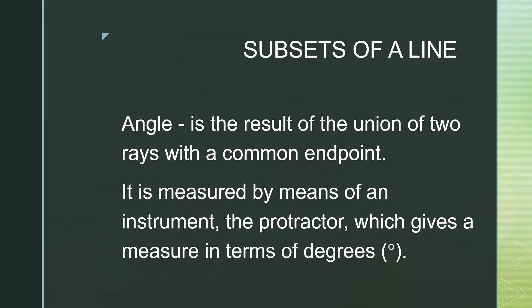The last subset of a line is the angle. An angle is the result of the union of two rays with a common endpoint. The two rays intersect at one common endpoint called the vertex. An angle is measured using an instrument called the protractor, and the measure is written in degrees.